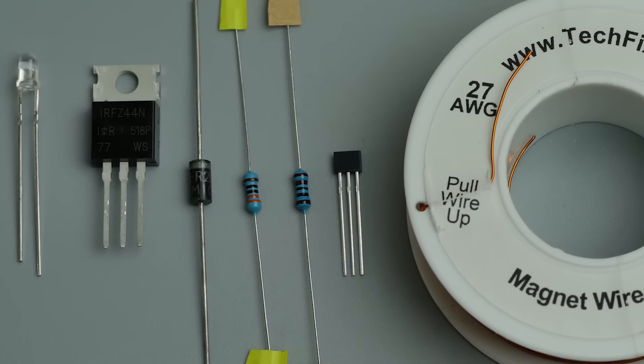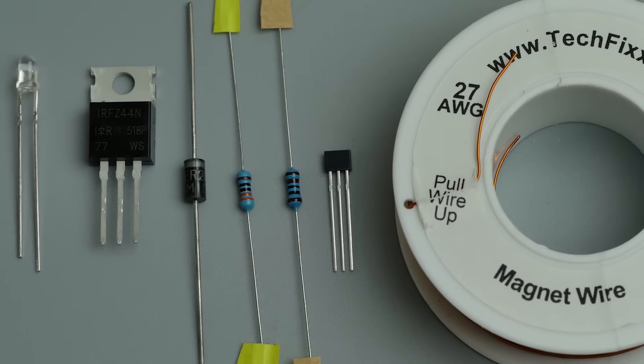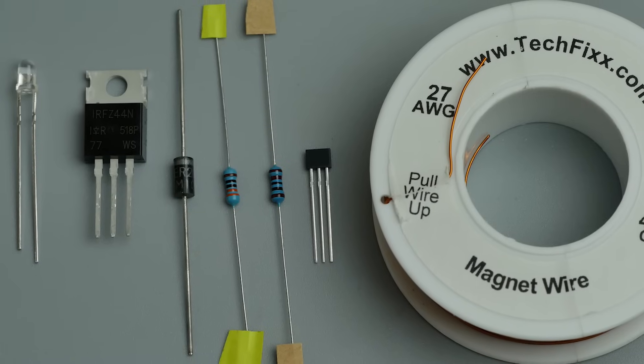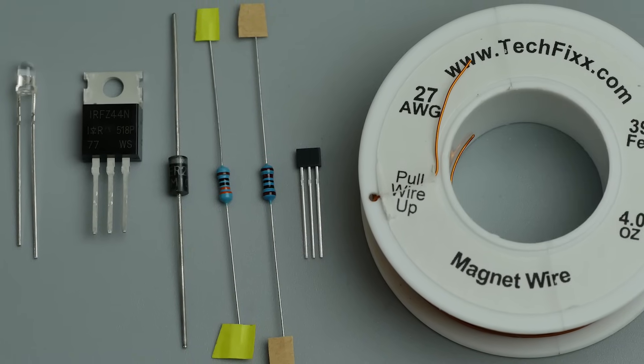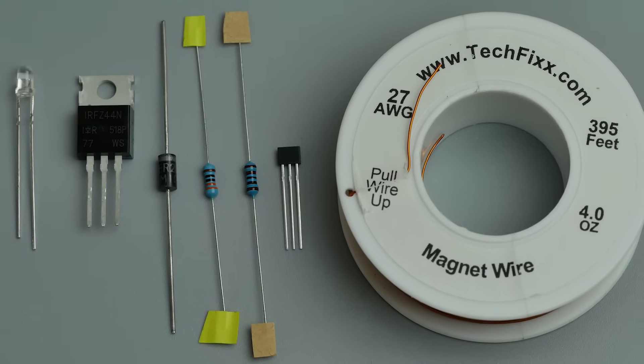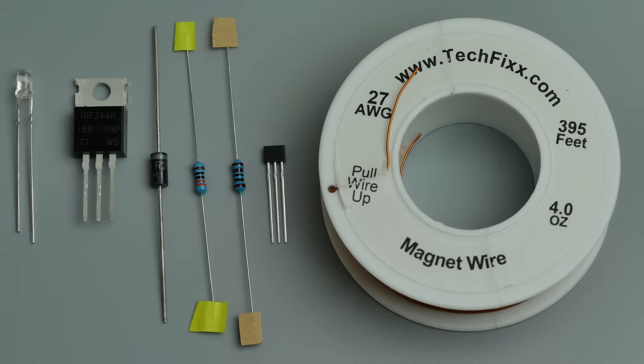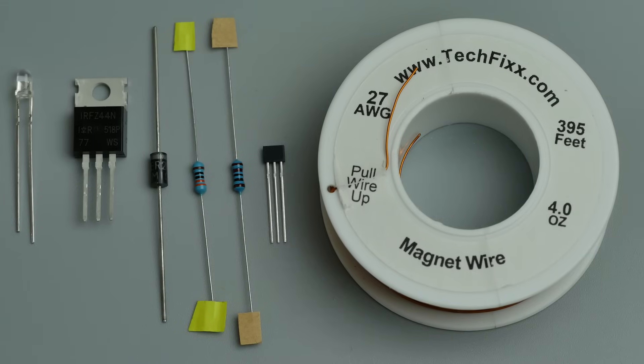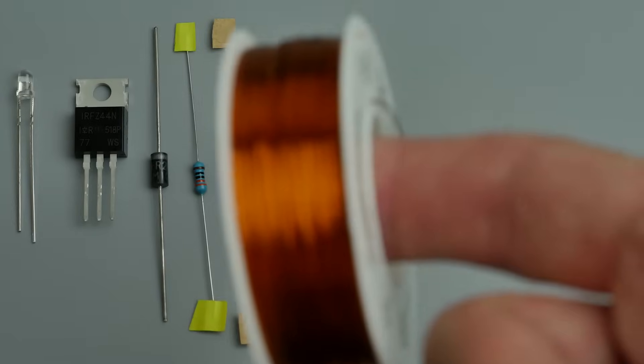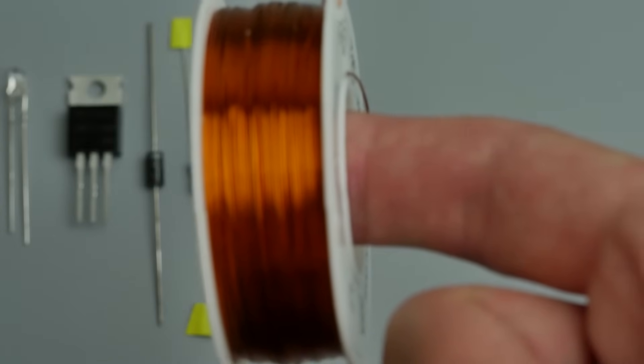LED, any color, it's not necessary. Transistor IRFZ44N, almost any similar MOSFETs are going to work well. Diode HER207, with the same success would work something like 1N4007. Resistors 1 kilo and 330 ohms, the latter is not necessary. Hall sensor is A3144, it can also be replaced by similar.